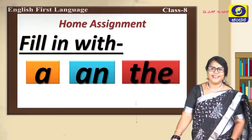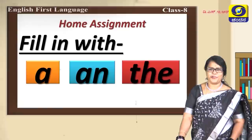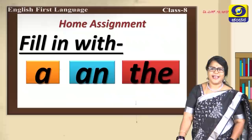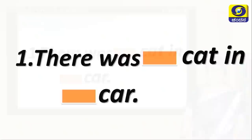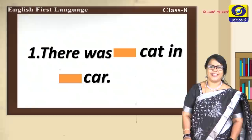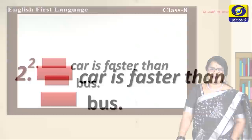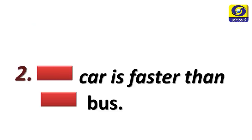Let's take up a few home assignments for articles. Quickly take down your books and pen and make a note. Here are some colour concepts: 'a' is in orange, 'an' is in blue, and 'the' is in red. You could guess and write. Fill in the blanks: there was dash cat in dash car. Dash car is faster than dash bus. My father is dash engineer. Dash honest man works hard. Those were the assignments for articles.